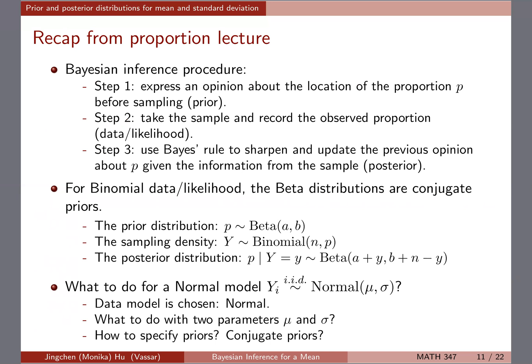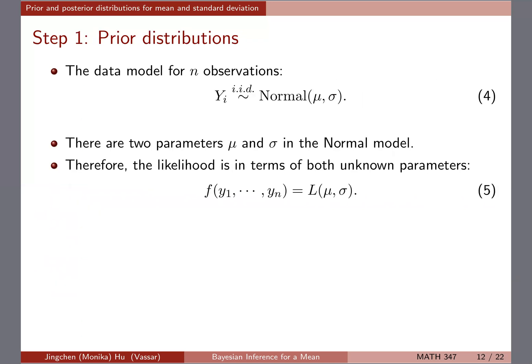The question now is: for a normal model, if you have y_i i.i.d. from a normal distribution with mean mu and standard deviation sigma, what do you do with two parameters? How do you specify priors? Are conjugate priors available? Those are the questions we're trying to answer, and we'll fix one parameter at a time to work on the other.